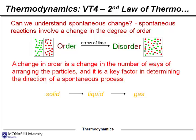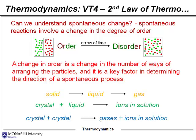As we go from solid to liquid to gas, we should expect an increase in the amount of disorder. As we put a crystal and a liquid together — for example, putting some salt in water — we would move to having ions in solution, which should naturally be thought of as an increase in disorder. And if two solids reacted with each other, perhaps giving gases and ions in solution, that's clearly a much more disordered form.